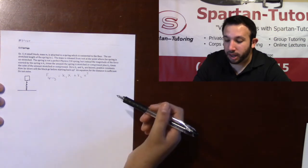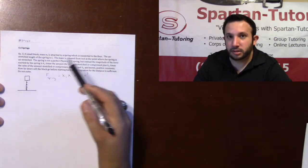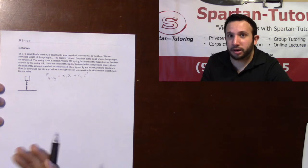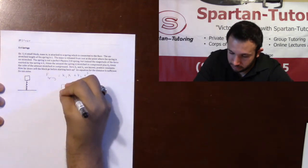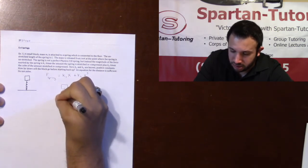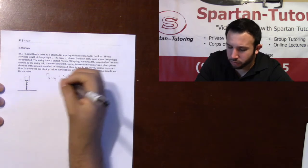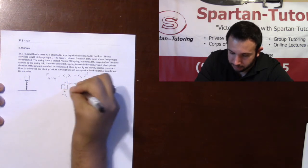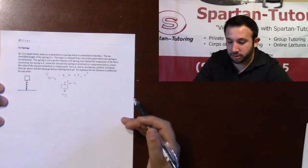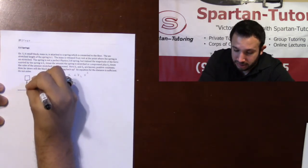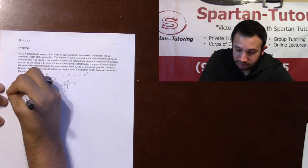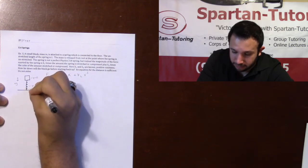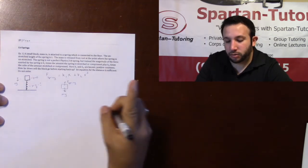How far down will the block go before starting back up? An equation for the distance is sufficient — do not solve. I'll draw a free body diagram to identify the forces. We have mg going down, no normal force, no friction since there's no surface, and the spring force coming up. Since I'm only looking at downward motion, I'll call the initial position y = 0, with down as the positive y direction, and yf is what I'm looking for.